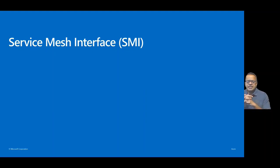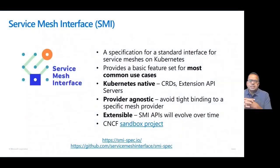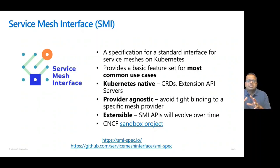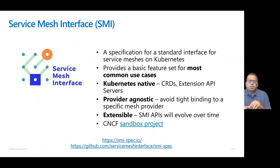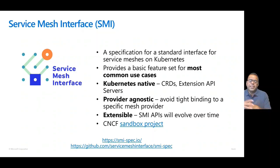Let's try to understand what a Service Mesh interface is. With the number of Service Meshes being developed, it was key that there was a standard spec that people could stick to. Service Mesh Interface (SMI) is a spec for a standard interface for service meshes on Kubernetes. The SMI interface can be installed on Kubernetes using custom resource definitions and extension APIs. The idea behind SMI is to provide a basic set of features for most common use cases, especially things like mTLS and traffic routing.